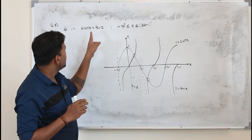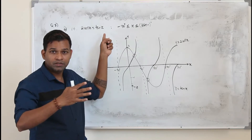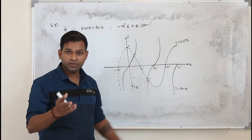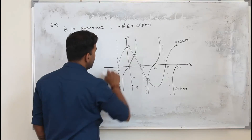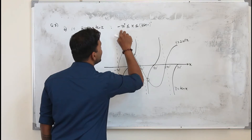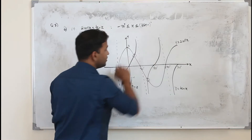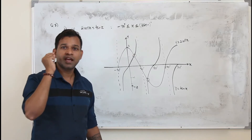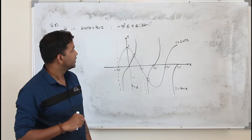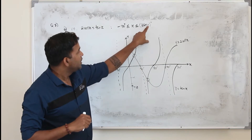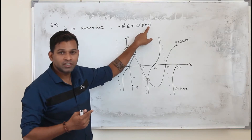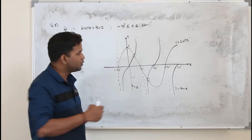When they say find the number of solutions, they want you to find the number of points of intersection not from minus 90 to 360, but from minus 90 to 360n. What is this n? This n can be 2, 3, 4, 10, or anything. So let's say if n is 2, this is 2 times 360, which is 720.